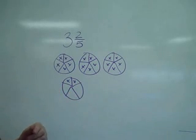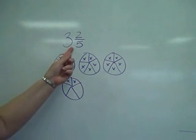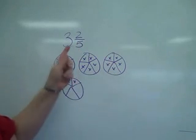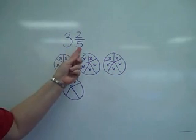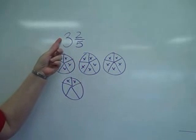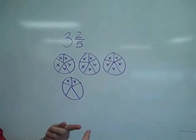Now, let's pretend I don't want to draw a picture for every single problem that I do. So, mathematically, what did I do? I took 5 times 3. So, I could multiply the bottom number or the denominator times the whole number, and then how did I do the 2? I added it.